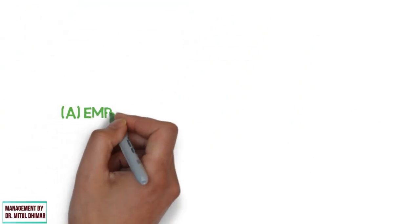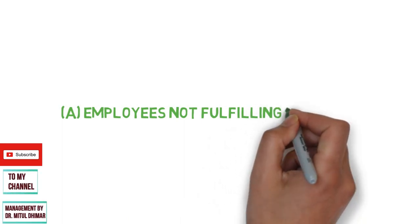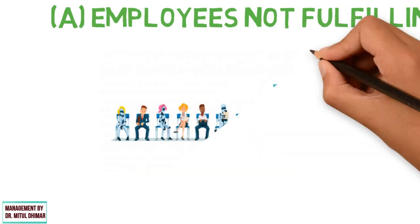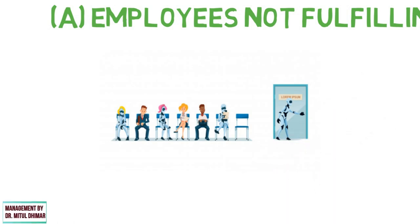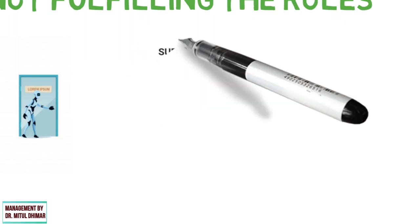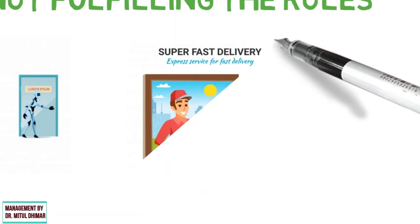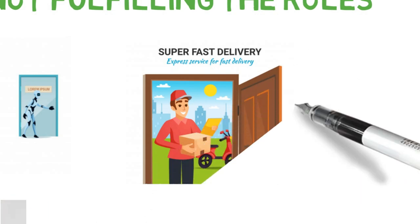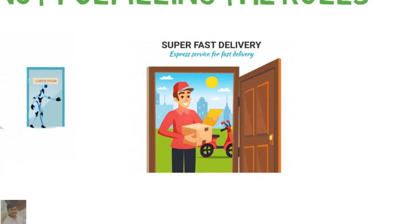Reason number one for gap three could be employees not fulfilling their roles. It is the role of employees to cater to the effective and efficient delivery of the service. If an employee is not delivering services to a customer's requirement, then this gap can exist. So we should recruit and train employees about how to deliver services on time. For example, as per Economic Times, September 2019, Domino's Pizza — the country's largest fast food chain — plans to commit to home delivery within 20 minutes of placing an order across the country. For this, proper training to employees is required.